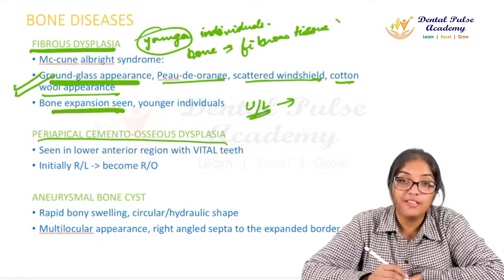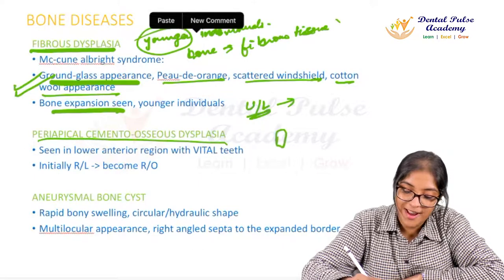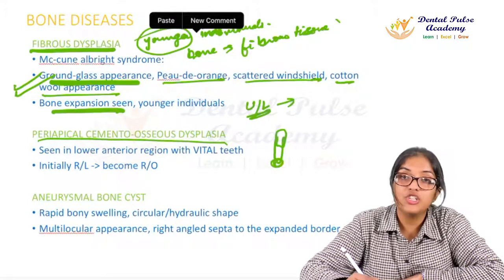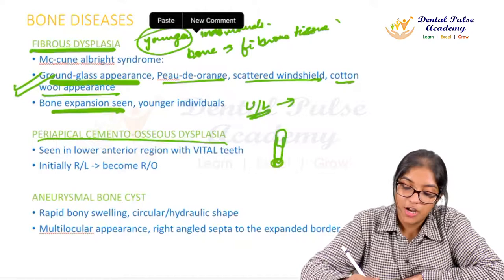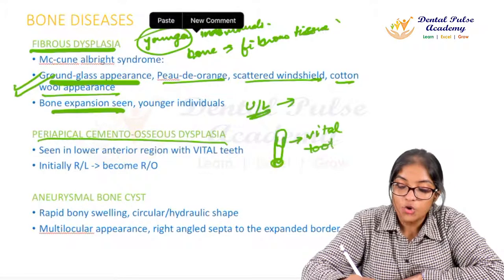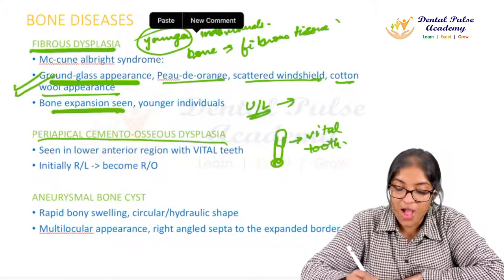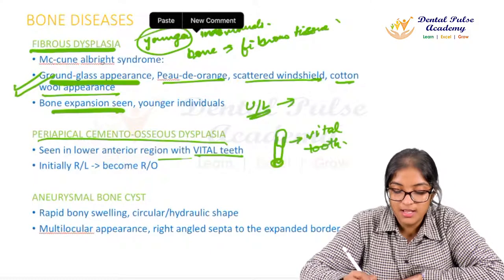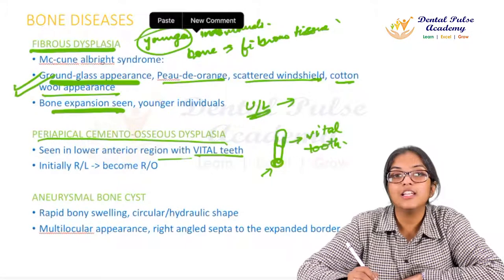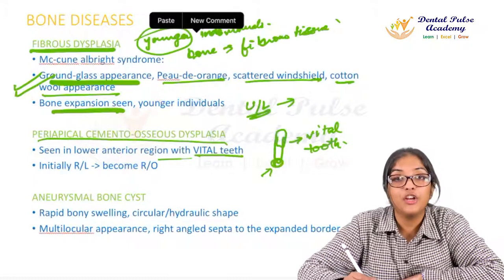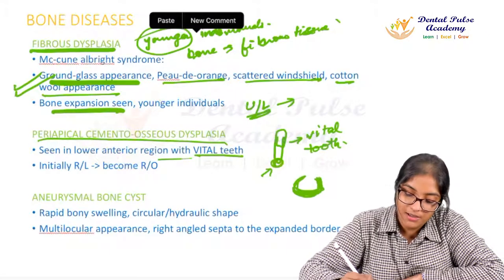Periapical cemento-osseous dysplasia is seen in the lower anterior region. To differentiate it from a radicular cyst or periapical abscess: it is associated with a vital tooth — no infection or trauma history. It starts as an extremely radiolucent lesion, slowly fills with bone showing areas of radiopacity within the radiolucency, and ultimately the capsule lining becomes unclear as the lesion matures.